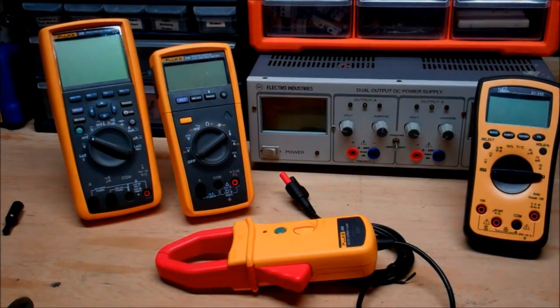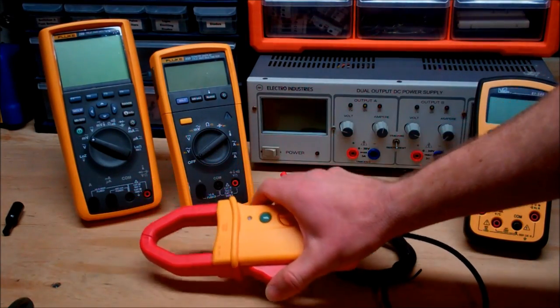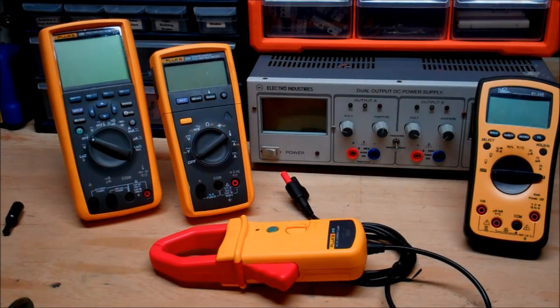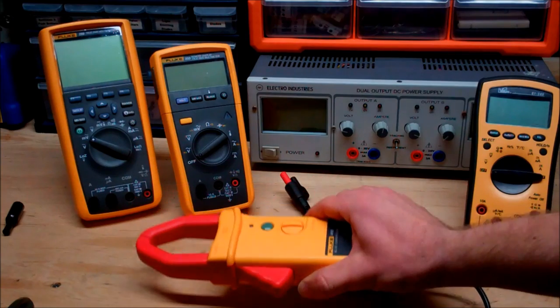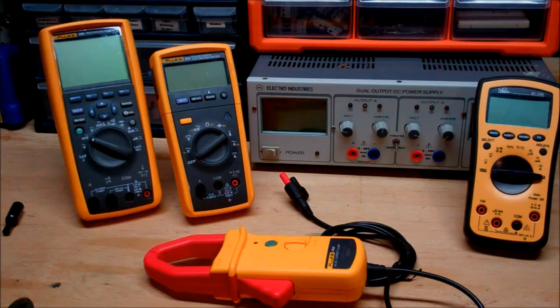Now I know there are some clamp meters where it is the multimeter itself, so you can take current measurements right directly and you don't have to worry about conversions or anything like that. Although they do exist, I'm not a huge fan of them. I prefer getting the combination of both, where you can throw this attachment onto your multimeter and take those massive readings, as well as do the fine finesse work of electronics and take into account microamps.